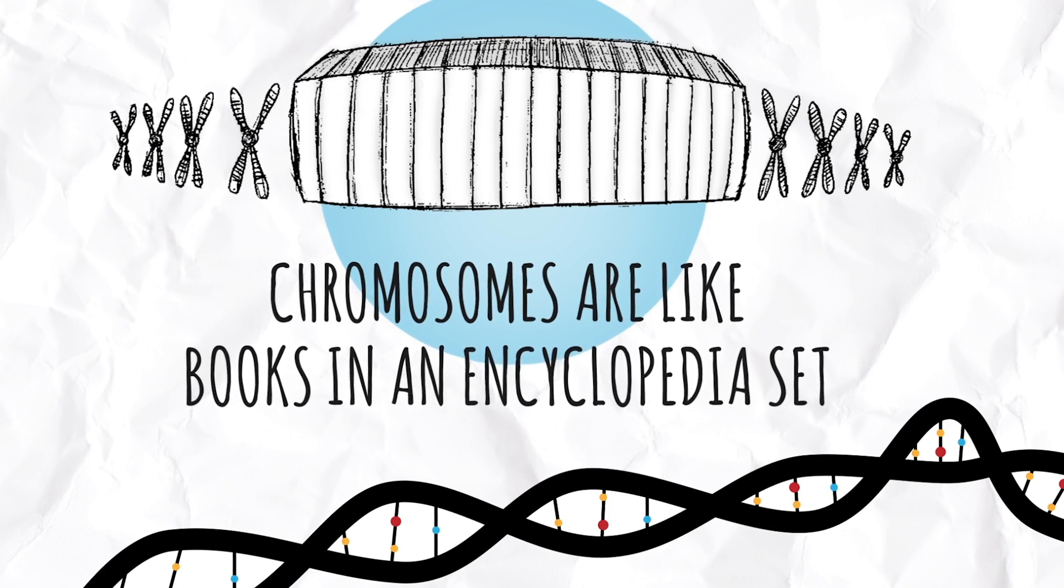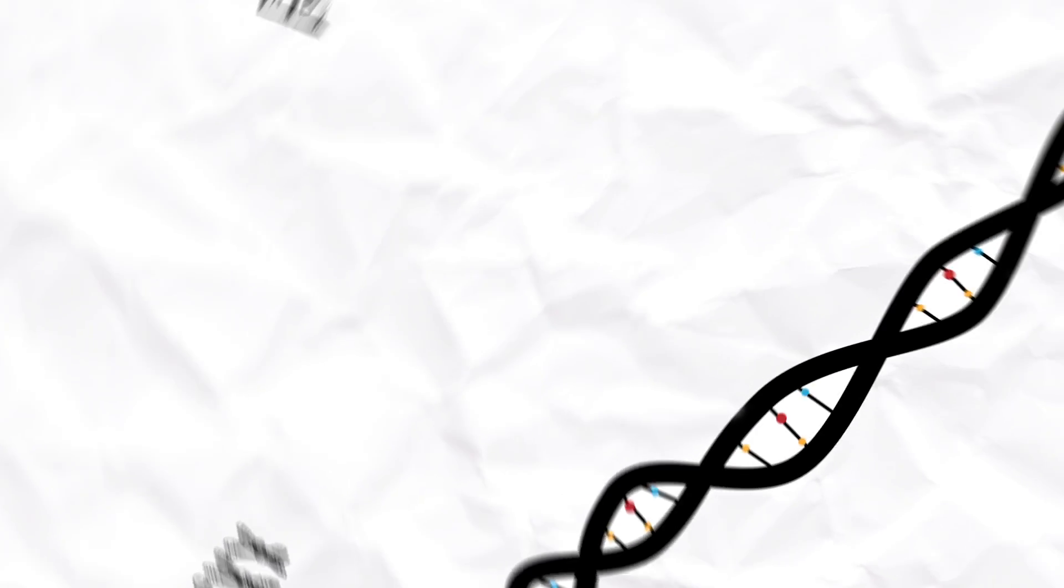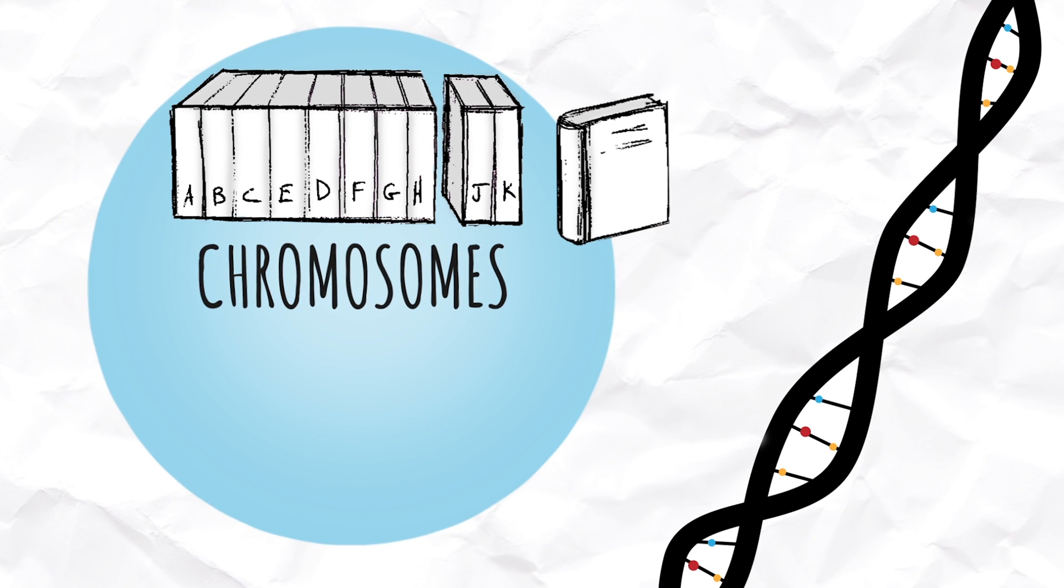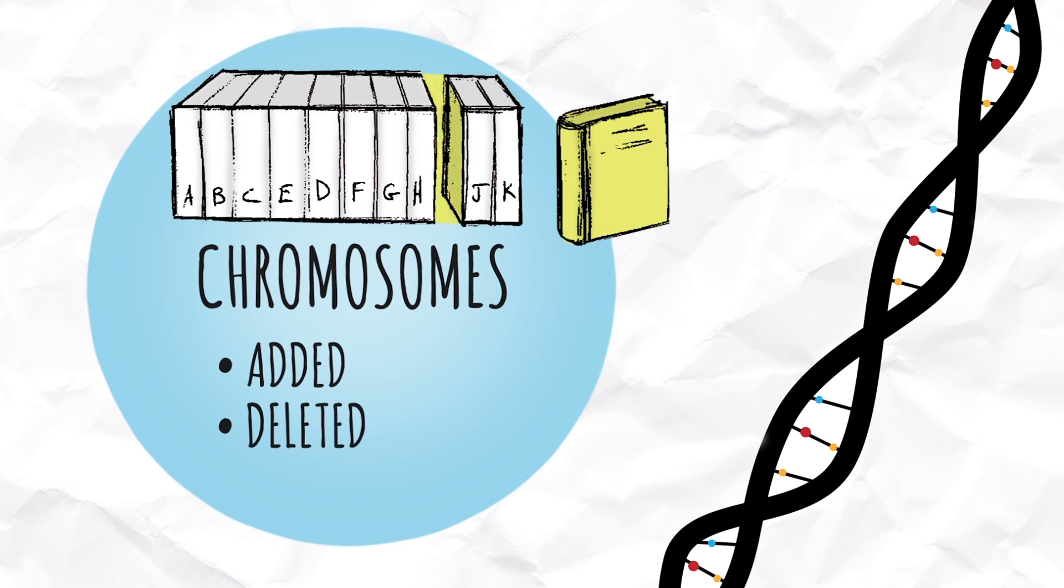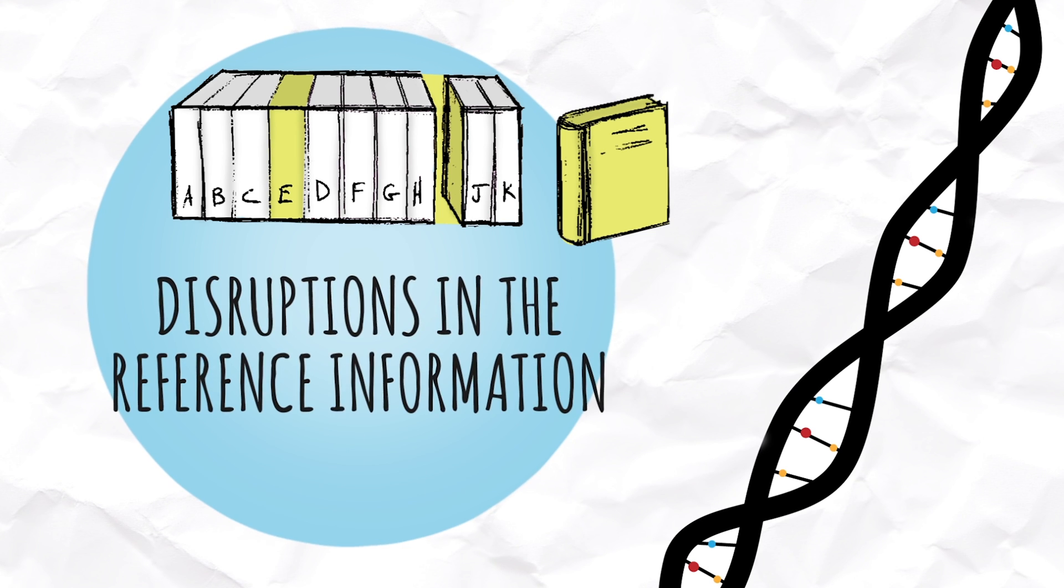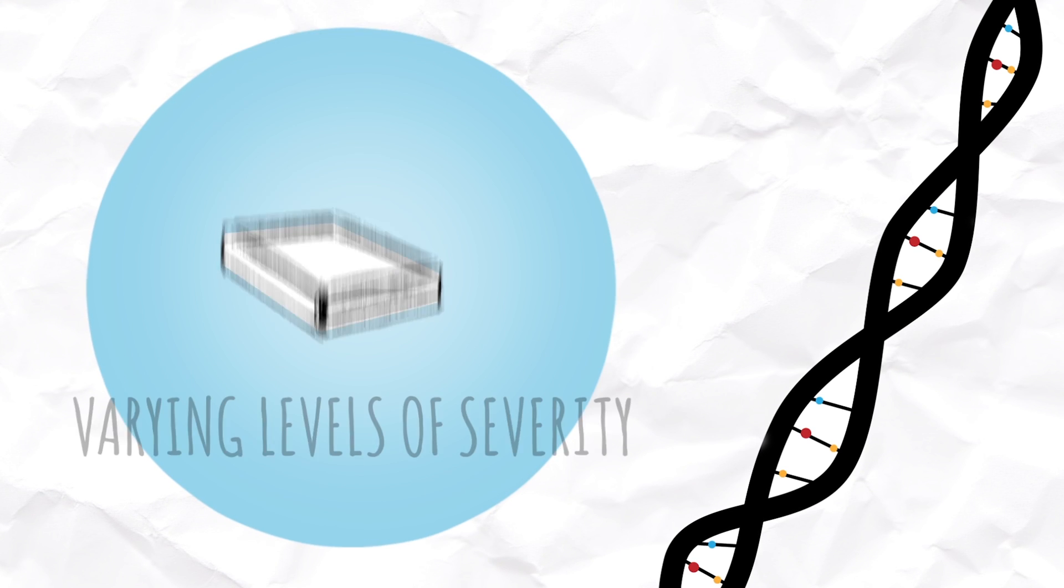Our chromosomes are like these books in the encyclopedia set. If one is added, deleted, or out of place, it may cause disruptions in the reference information. The severity of this disruption may depend on how much information is changed as a whole.